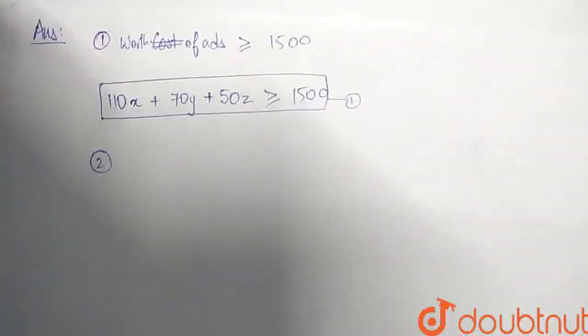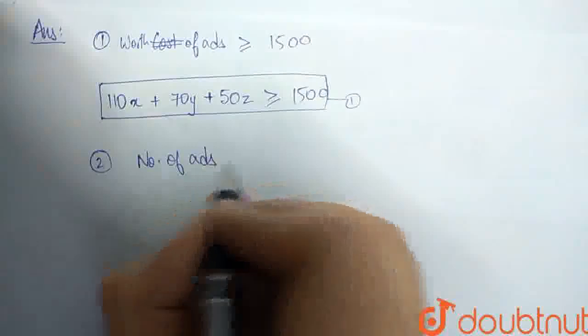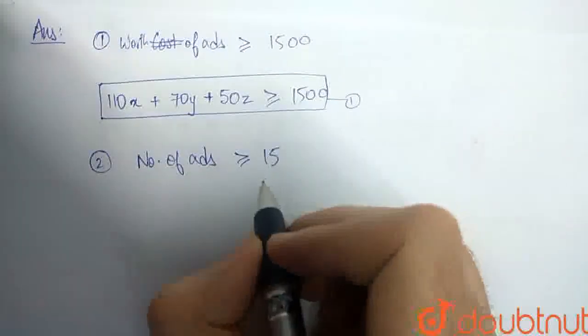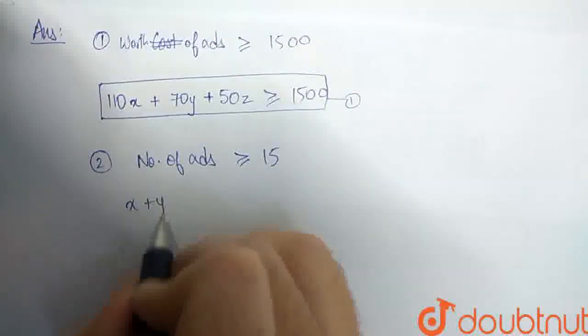Number of ads must be greater than or equal to 15. So, number of ads here is directly x plus y plus z.